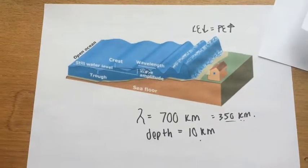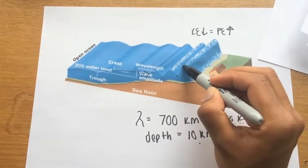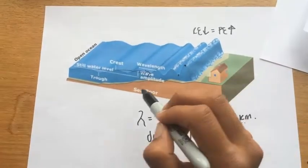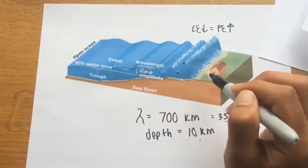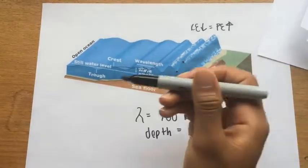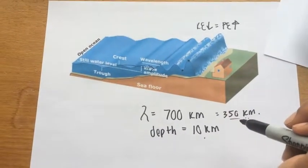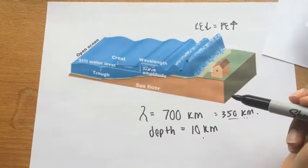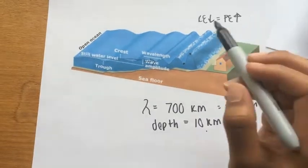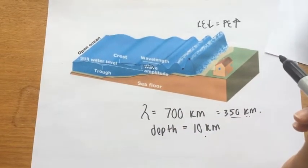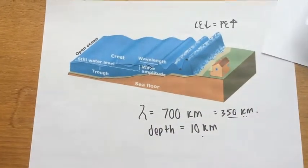There are two ways a tsunami can hit the shore: one is with a trough first, and one is with a crest first. If it hits with a crest first, it's just a sudden surge of water without any warning. But if it hits with a trough first, the water recedes first, and often people are so interested in seeing the bottom of the bay that they run out to explore. Since the wavelength is so great, it takes about 20 minutes to go from trough to crest — and so 20 minutes later, this huge surge of water comes and leads to mass destruction.